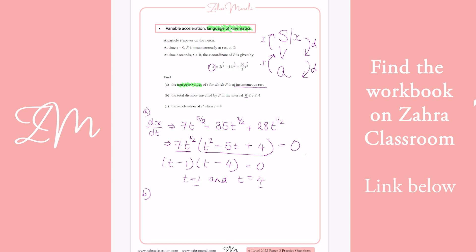So if I stick into the original one, when t equals 0, x equals 0. When t equals 1, we're going to get 2 minus 14 plus 56/3, which gives me 20/3.